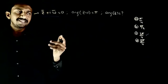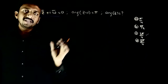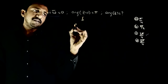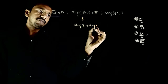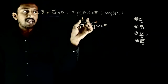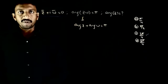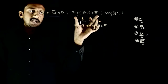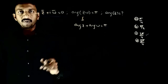Let us try to analyze these equations. Ye wale equation is very simple, very straightforward. Yehaan hum likh sakte hain: argument of z plus argument of omega is equal to π. Because argument of zω is argument of z plus argument of omega.